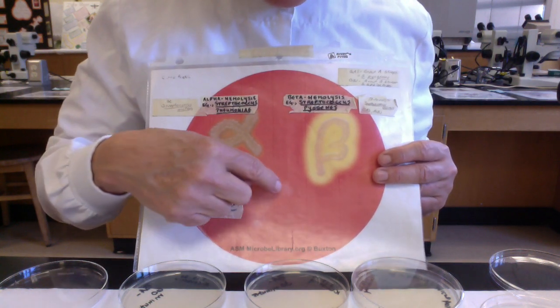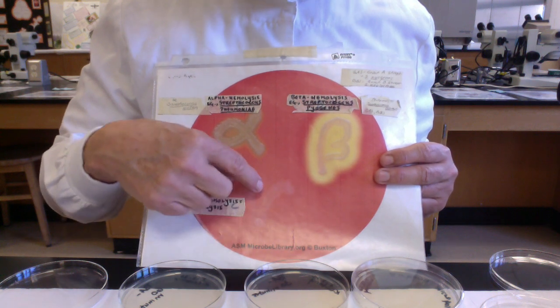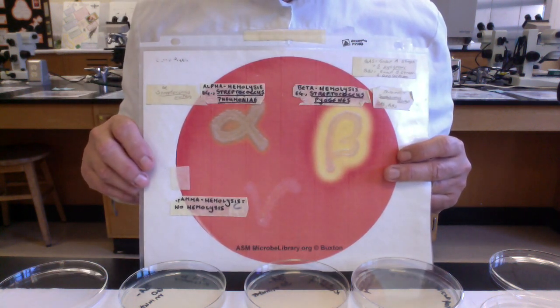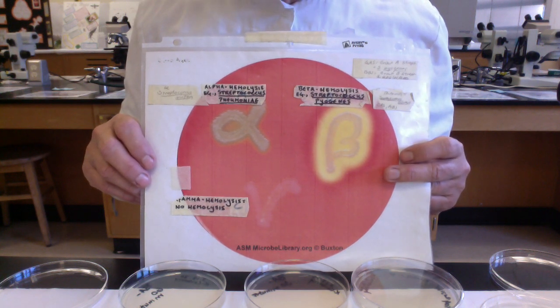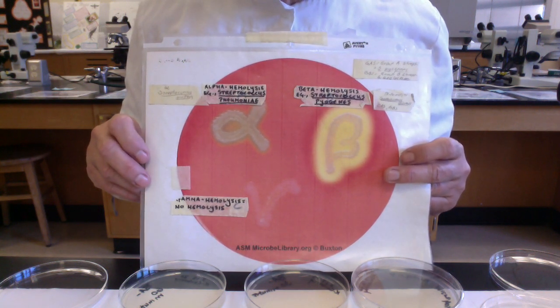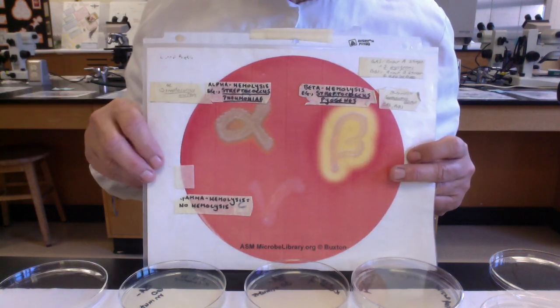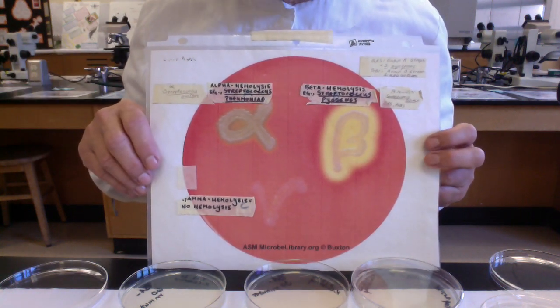And then down here, this is really hard to see. This is called gamma hemolysis, and it's no hemolysis. Why they had to call it gamma hemolysis, I don't know. But most microbes are going to be gamma hemolytic. Being able to do alpha or beta hemolysis is rather unusual in the microbial world.